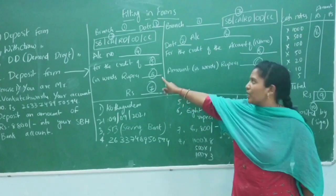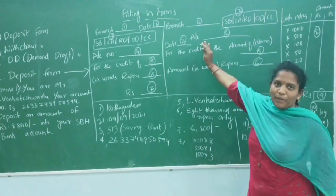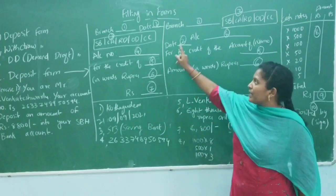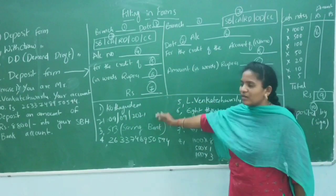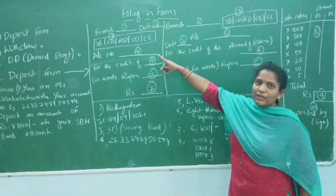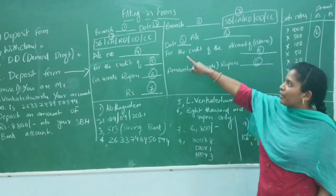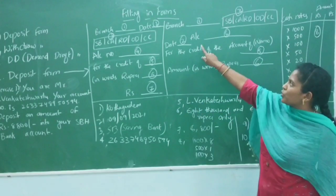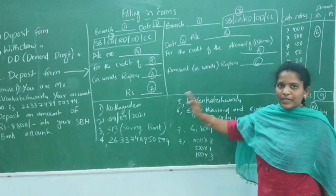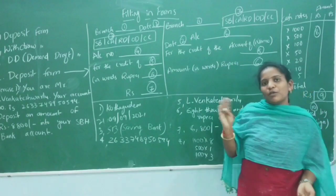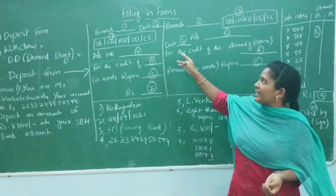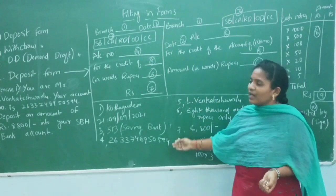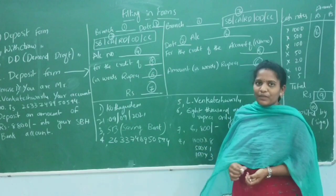This is about the deposit form. The form has two parts - one for the bank and one for you. There are numbered fields: one for branch, two for date. You fill in all the required information, and that completes the deposit form.